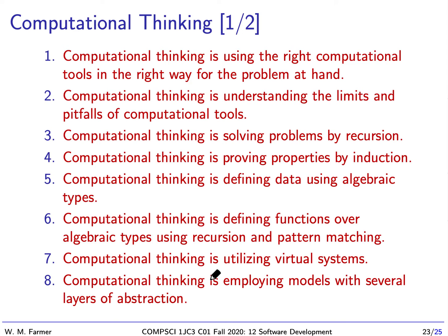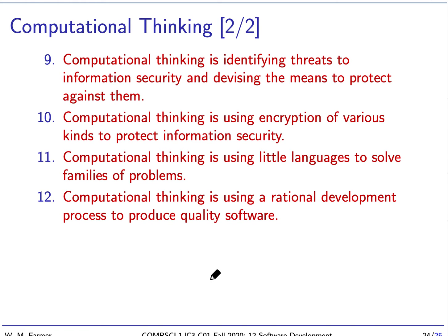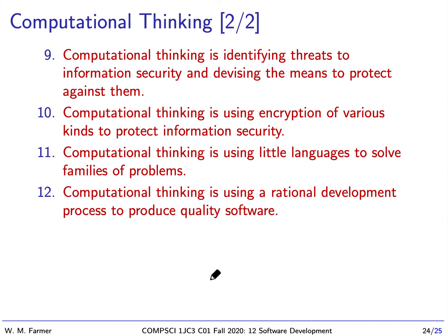Number nine: identifying threats to information security and devising the means to protect against them. Number ten: using encryption of various kinds to protect information security. Number eleven: using little languages to solve families of problems. And number twelve: using a rational development process to produce quality software.